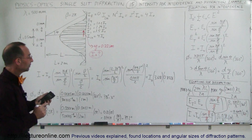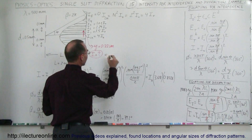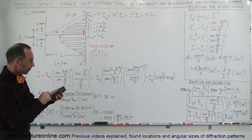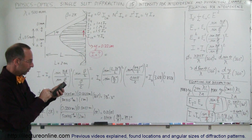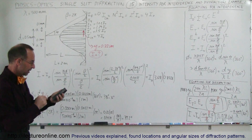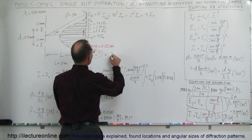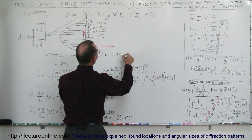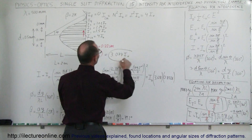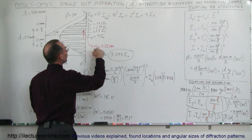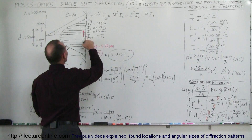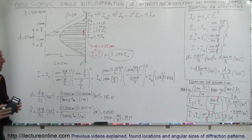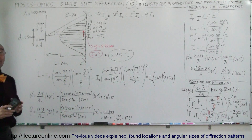Now we multiply everything together: 0.8506 times 3.618 gives 3.077 I₀. That is the intensity at a position 0.22 centimeters away from the central maximum, and that's how we do that.